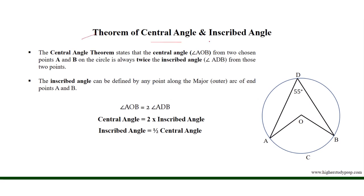The central angle theorem states that the central angle from two chosen points A and B on the circle is always twice the inscribed angle from those two points. For this circle, the center is O.